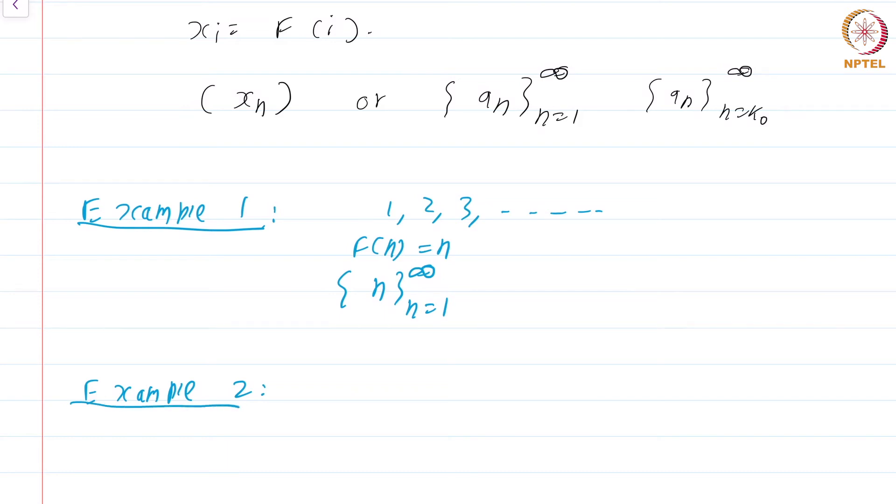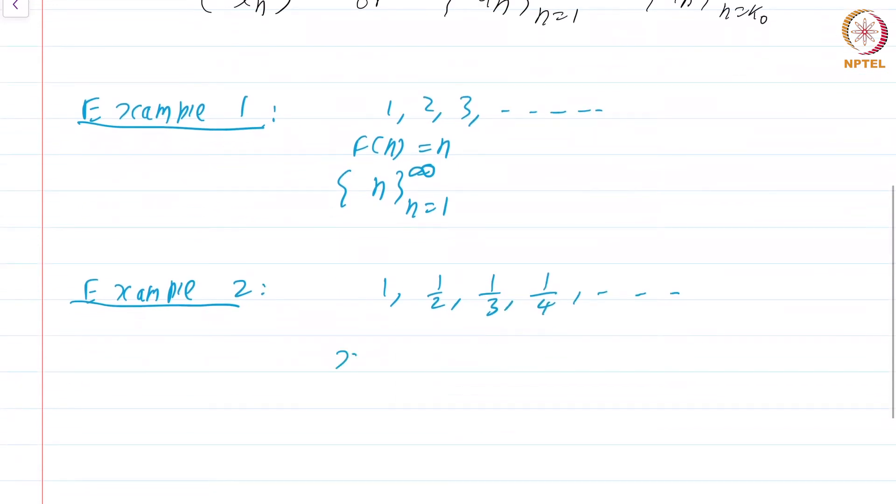Example 2: Consider the sequence 1, half, 1 by 3, 1 by 4, and so on. This is just the sequence x_n equal to 1 by n. Sometimes we shall be even more loose and just say the sequence 1 by n. This sequence is ever decreasing. Not only is it ever decreasing, it seems to be approaching or limiting to the point 0, the number 0. We will make precise what this means soon.